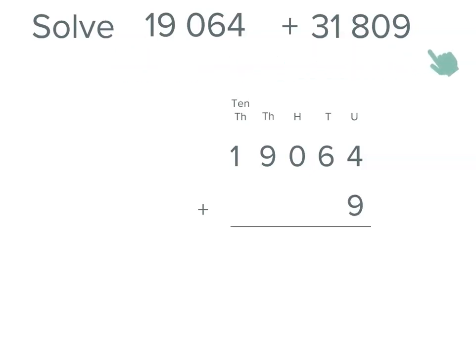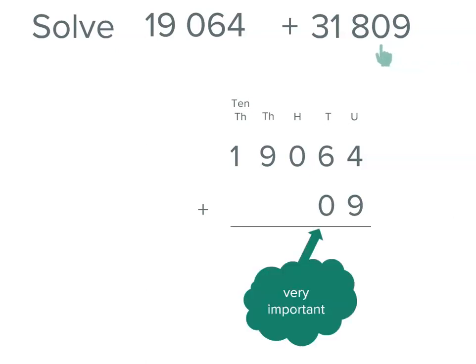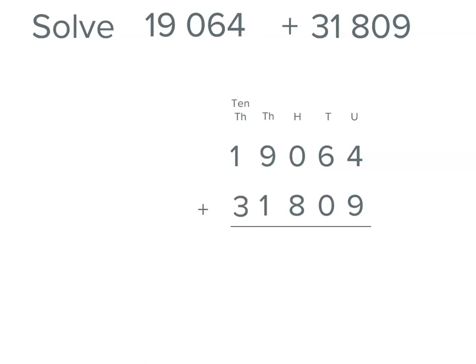And then we're adding 31,809. So we've got nine in the units place, no tens. So it's really important again that we put that zero placeholder in the tens place, because otherwise the eight might not sit in the correct place. And we've got eight hundreds, so that needs to be in the hundreds place. We've got one thousand and three in the ten thousands place.